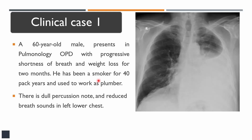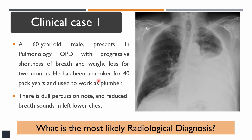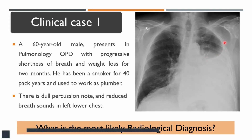This is the x-ray. What is the most likely radiological diagnosis? If you have seen my previous x-ray videos, you should be able to identify the abnormality. On the left side, there is a homogenous opacification in the left middle and lower zone. You cannot see the left diaphragm or the left heart border. The upper border of this opacification is concave with a meniscus sign, going upwards laterally along the chest wall. This is a typical finding of left-sided pleural effusion.